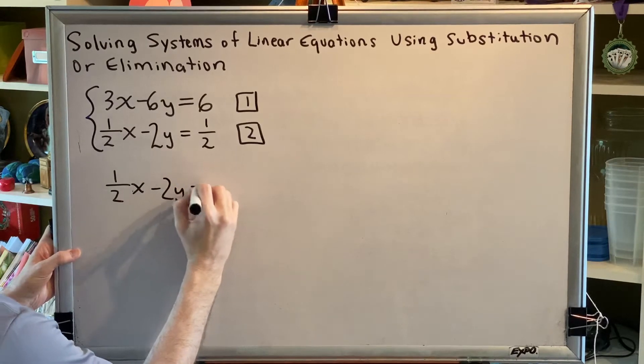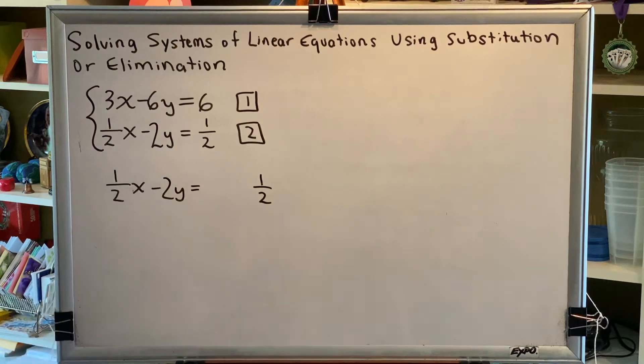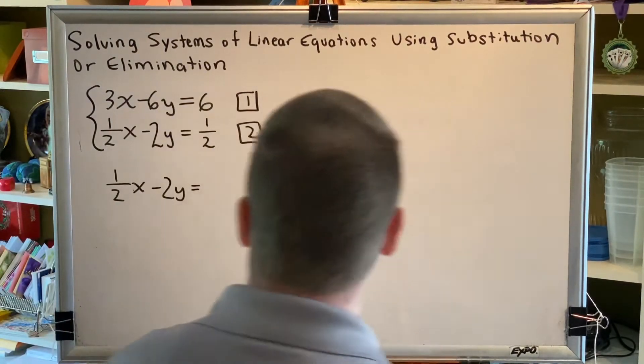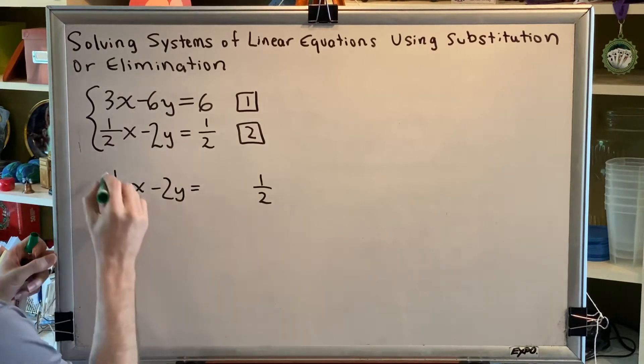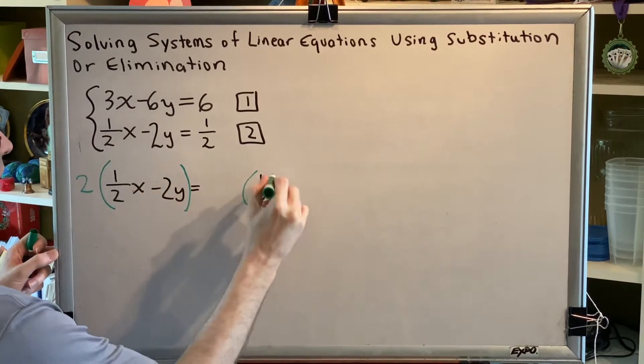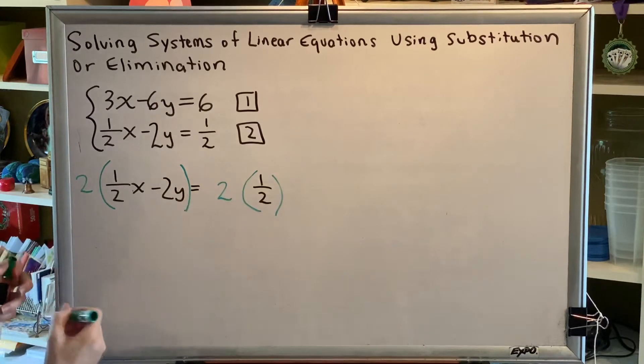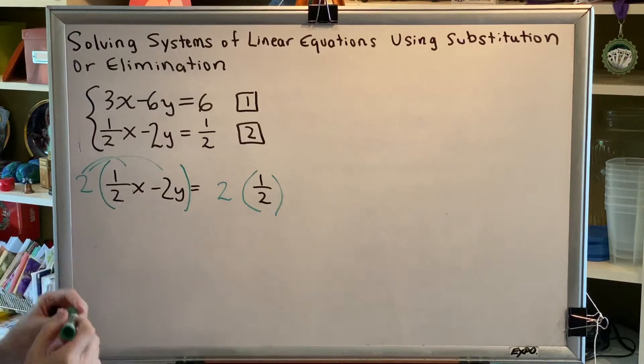So let's go ahead and clear this equation of fractions. The way we do this is by multiplying both sides of the equation by the least common denominator of all denominators in the entire equation. Our denominator is 2 and 2, therefore the least common denominator is 2. So we're going to multiply both sides by 2. On the right we simply multiply, but on the left we have to use the distributive property.